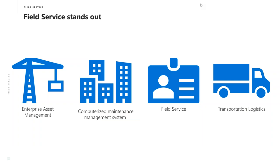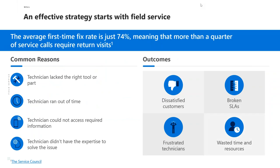Areas where field service really stands out include enterprise asset management, maintenance and management systems, traditional field service, and transportation logistics. Based on a research study by the Service Council, the average first-time fix rate is only 74%, meaning more than a quarter of service calls require return visits. Common reasons include: the technician lacked the right tool or part to complete the job, the technician ran out of time, the technician could not access the required information, or the technician didn't have the expertise to solve the issue.